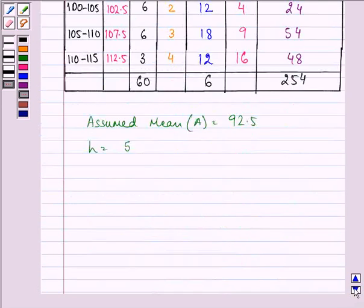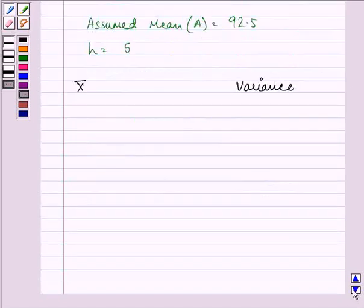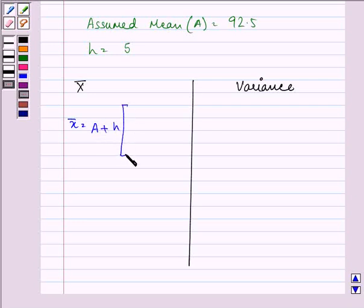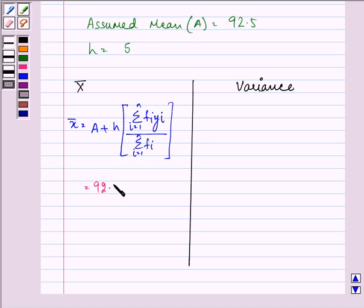So what we need to find out here is we need to find out the mean, the variance and the standard deviation. So let us first find out the mean and it is A plus h into summation fi yi upon summation fi and that is further equal to, we have assumed mean as 92.5.